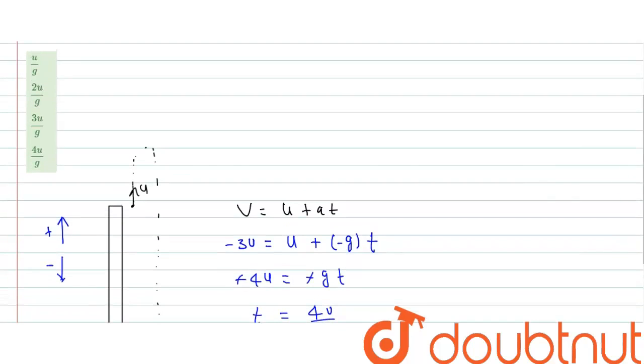So here 4u upon g, option d, is our final answer. I hope you have understood the explanation. Thank you.